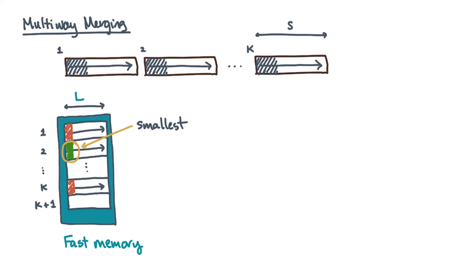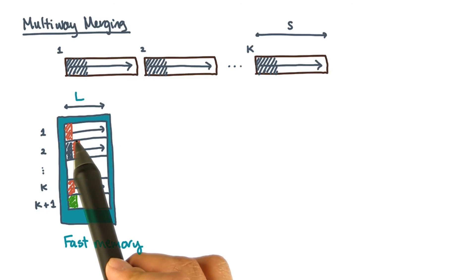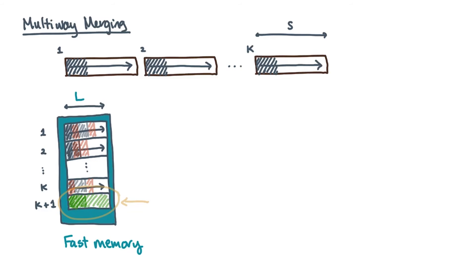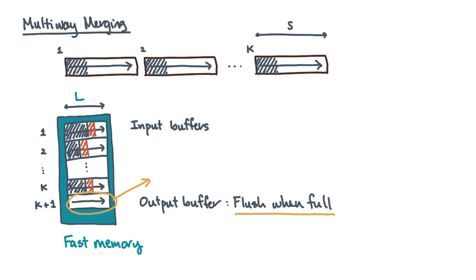You can move this smallest item to the output buffer. The next item from the source buffer now becomes active. You then repeat this process. For instance, maybe this first block has the next smallest item. So move it and make the item that follows it active. As with two-way merge, you will at some point fill the output block. When that happens, you just need to flush it.